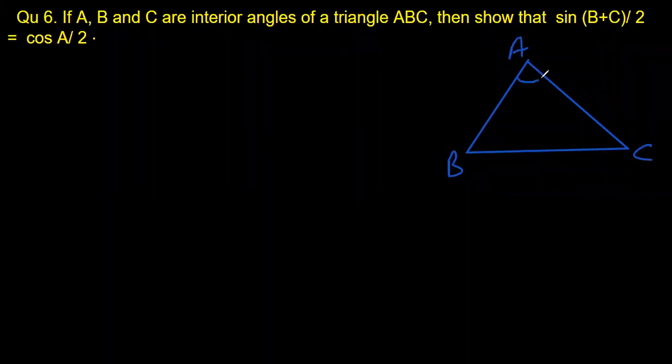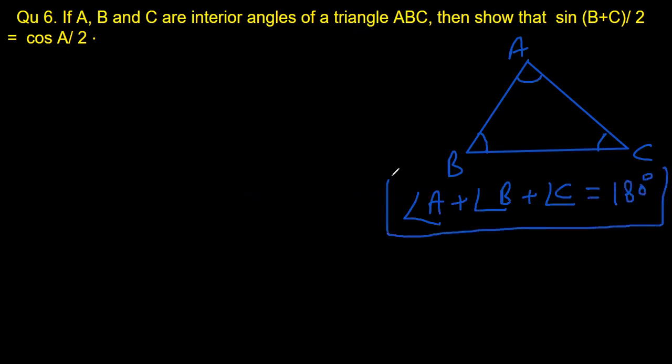What do we know about interior angles of a triangle? Yes, can we say angle A plus angle B, angle sum property of triangle, is equal to 180 degrees. Doesn't matter what is the type of triangle, you will always get the sum of interior angle of a triangle is 180 degrees. For simplicity, we are writing A plus B plus C is equal to 180 degrees.